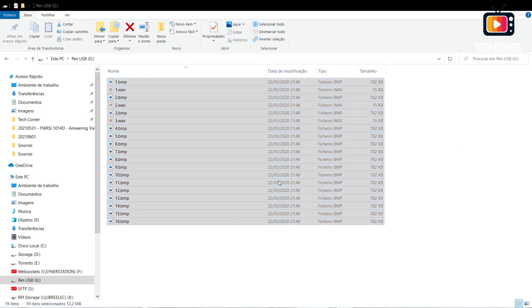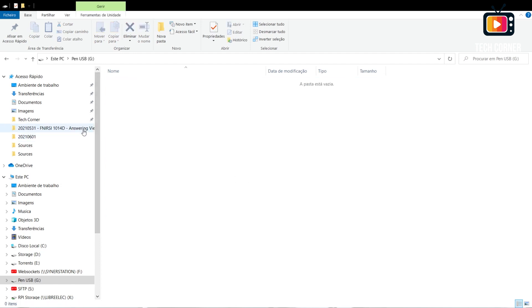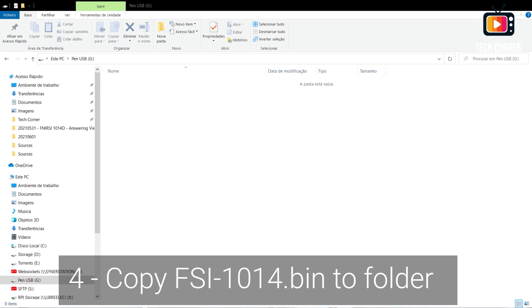Those are waveforms and captures that you did you may copy to the PC and then you will copy the file fsi-1014.bin to this folder and that is the firmware file to upgrade your oscilloscope.